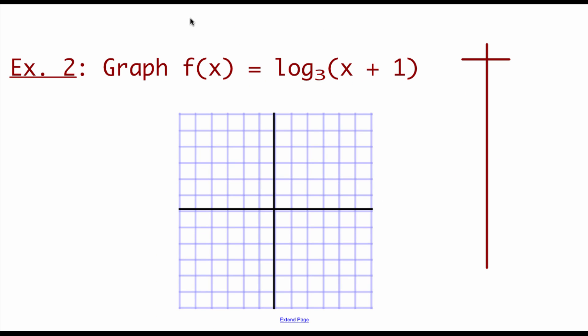Next example says we're going to graph out f of x equals log base 3 of x plus 1. And again, I'm going to rewrite this as an exponential equation. So this would say 3 to the y equals x plus 1. But I'm going to get x all by itself. So we get 3 to the y minus 1 equals x.